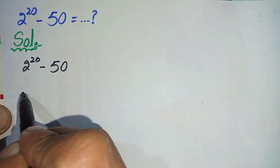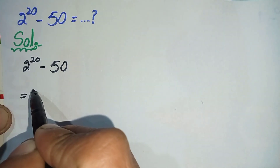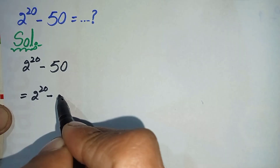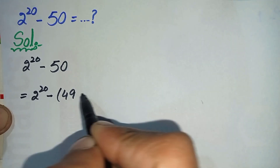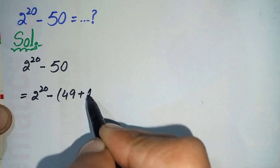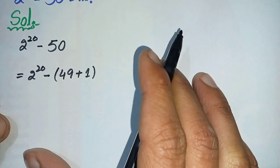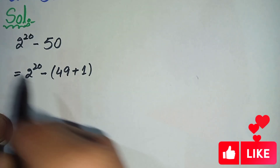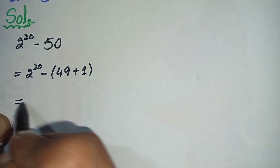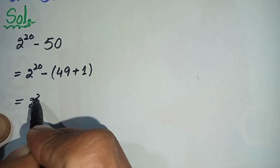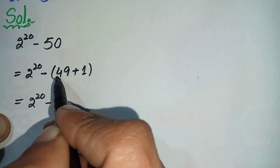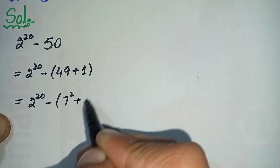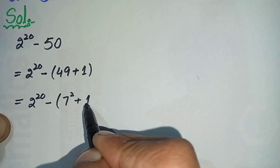In the second step, we will keep 2 raised to power 20 the same and we can write 50 as 49 plus 1. In the next step we will change 49 to its exponential form, so we can write this equation as 2 raised to power 20 minus 7 squared — because 7 times 7 is 49 — plus 1.